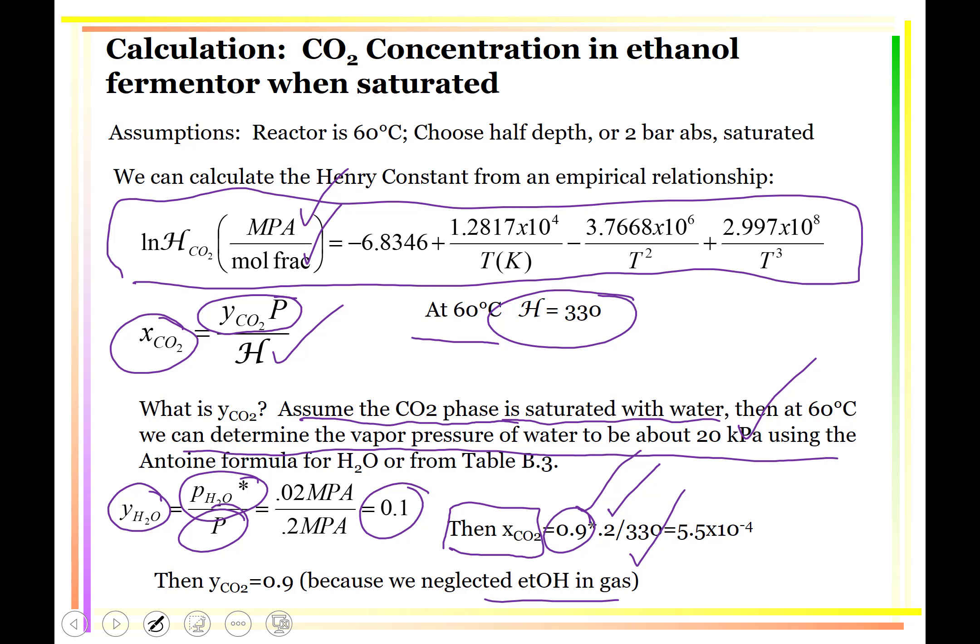And other than that, it's just saturated with water. So having a mole fraction of CO2 in the vapor phase of 0.9 gives us this small mole fraction of CO2 in the liquid phase. So this is actually a good, reasonable calculation.